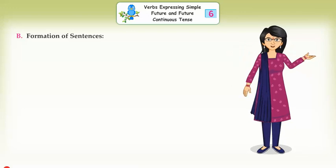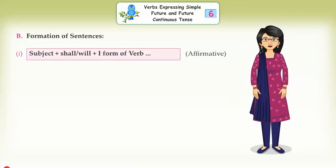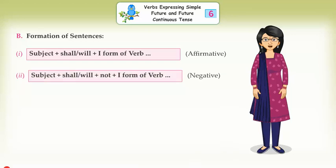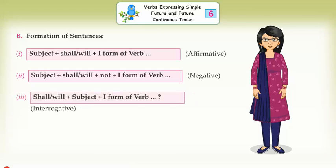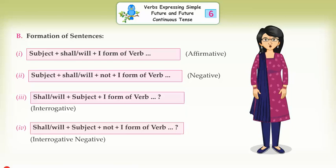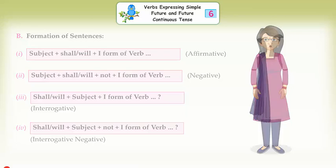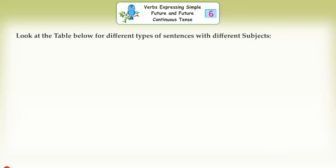Formation of Sentences. First, Subject + Shall/Will + First Form of Verb (Affirmative). Second, Subject + Shall/Will + Not + First Form of Verb (Negative). Third, Shall/Will + Subject + First Form of Verb (Interrogative). Fourth, Shall/Will + Subject + Not + First Form of Verb (Interrogative Negative). Look at the table below for different types of sentences with different subjects.